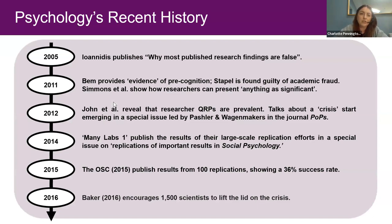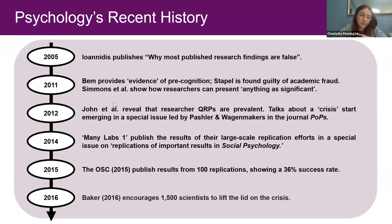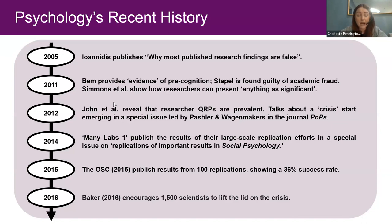I wrote a book called 'A Student's Guide to Open Science: Using the Replication Crisis to Reform Psychology.' I want to give you an overview of psychology's recent history — how we got here and how we started having this deep reflection that there were problems in our field. In 2005, Ioannidis published a paper suggesting that most published research findings are false, which sent shockwaves through the academic community.